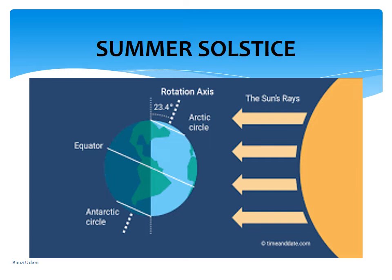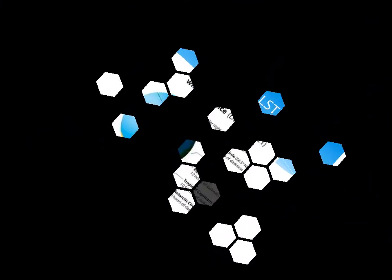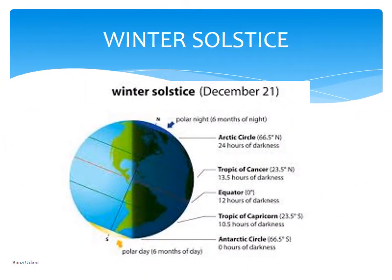The position of the earth on June 21st is called the summer solstice, when nights are longer than days in the southern hemisphere. On 22nd December, the Tropic of Capricorn receives direct rays of the sun as the south pole tilts towards it. The sun rays fall vertically at the Tropic of Capricorn, which is 23 degrees south, so a larger portion of the southern hemisphere gets light. Therefore it is summer in the southern hemisphere, with longer days and shorter nights. The reverse happens in the northern hemisphere — this position is called the winter solstice.